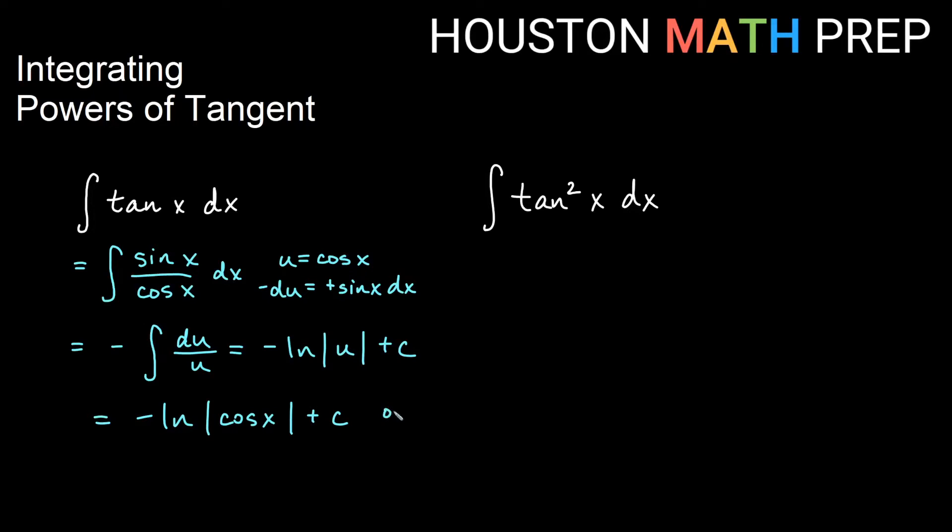You may also see this one in a different way with secant. The idea would be to think of this as a negative one. Property of log says I can move the negative one in front to be a power inside of the log. So it would be cosine x to the negative one, which would be the reciprocal. You can also write this as ln of absolute value of secant x plus c. Either one is acceptable.